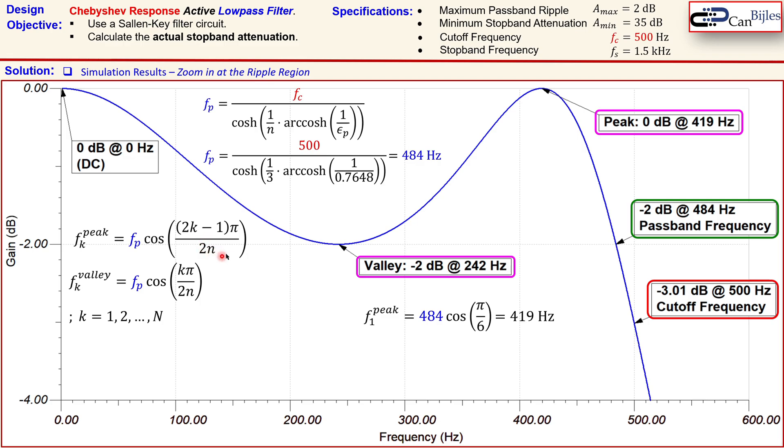And that's shown here, and this is now the 484 Hz from the passband frequency. Now, this will result in 419 Hz, which is exactly as we have it in the simulator. So, this is actually really nice to see.